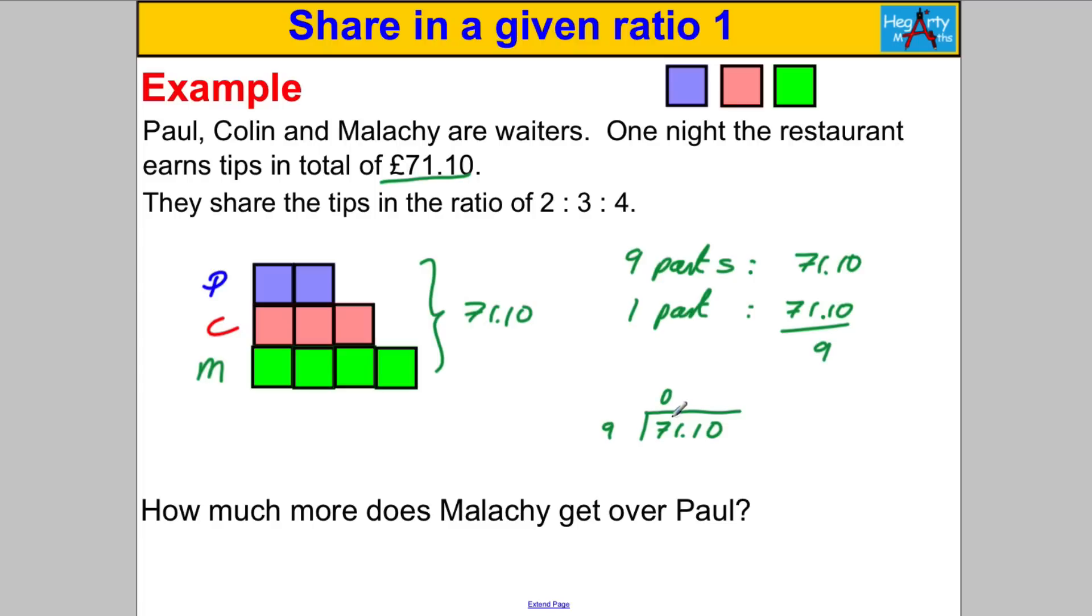Does 9 go into 7? No, carry the 7. Does 9 go into 71? Yes it does, 7 times, because 7 nines are 63, left over 8. Does 9 go into 81? It does indeed, 9 times. 9 going to 0? No. So therefore one part must be worth 7 pounds 90, like that. So in each box goes 7 pounds 90.